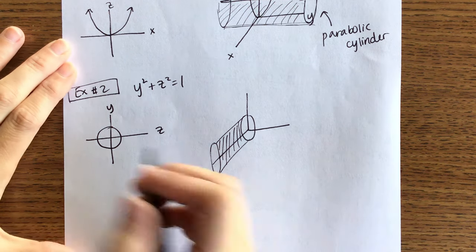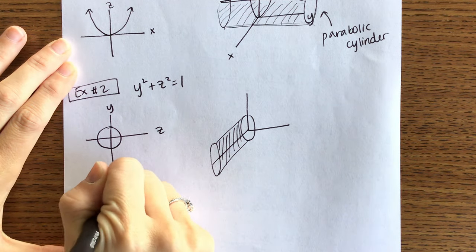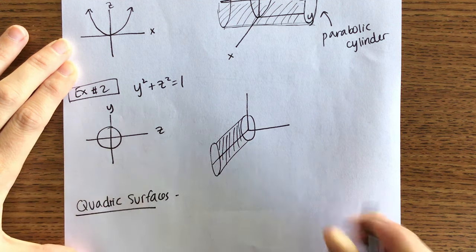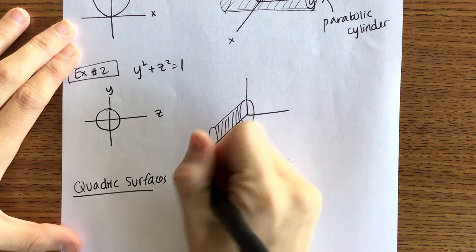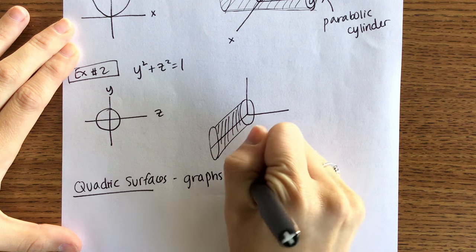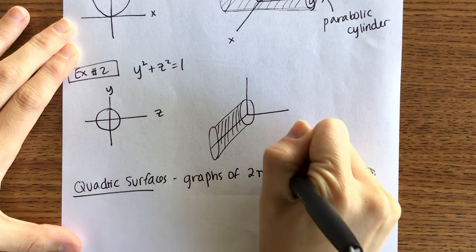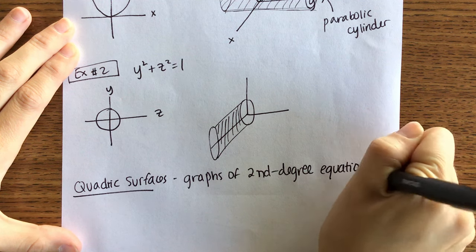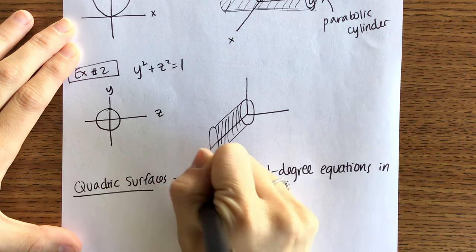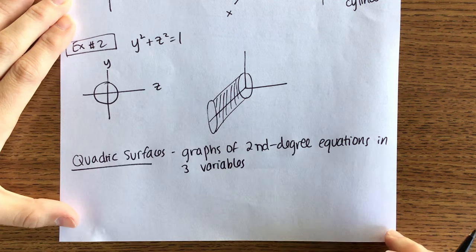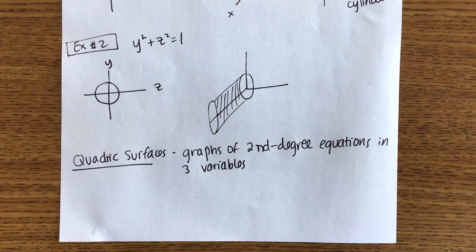The next thing we're going to talk about is quadric surfaces. Quadric surfaces are graphs of second-degree equations that have three variables. So this is the case where it's second-degree, it's in three-space, and we have all three variables.